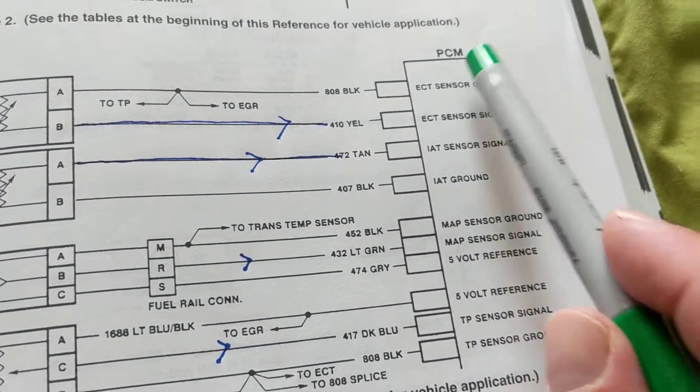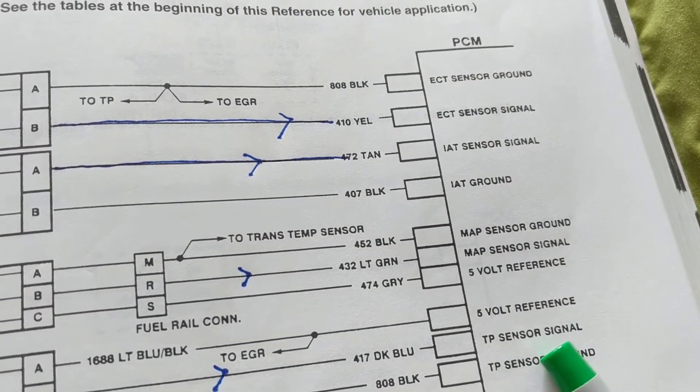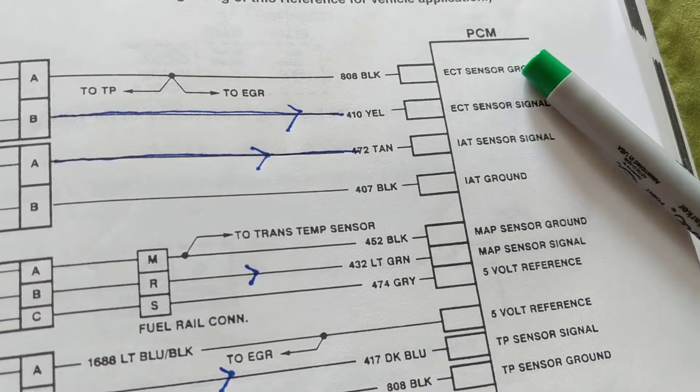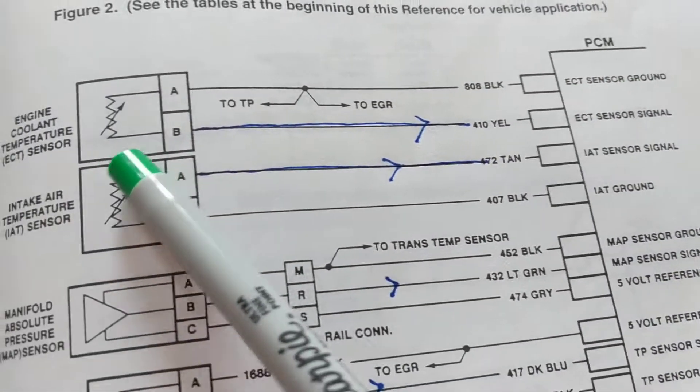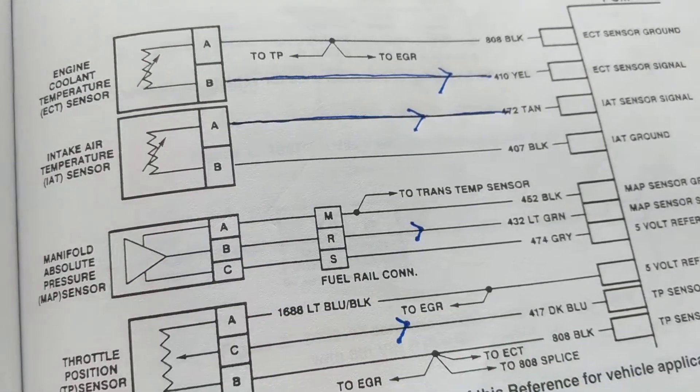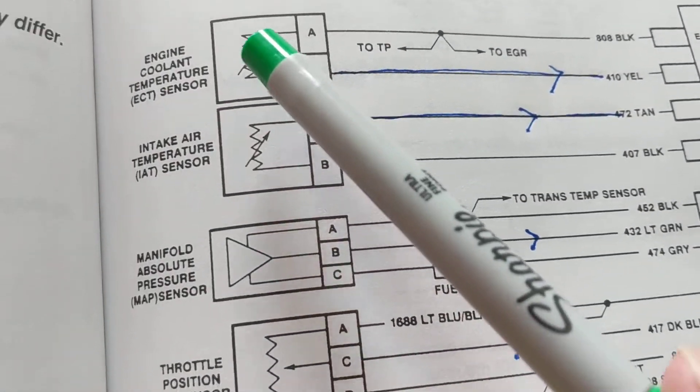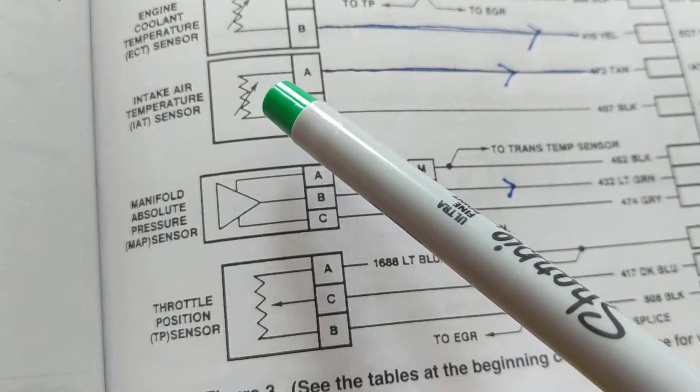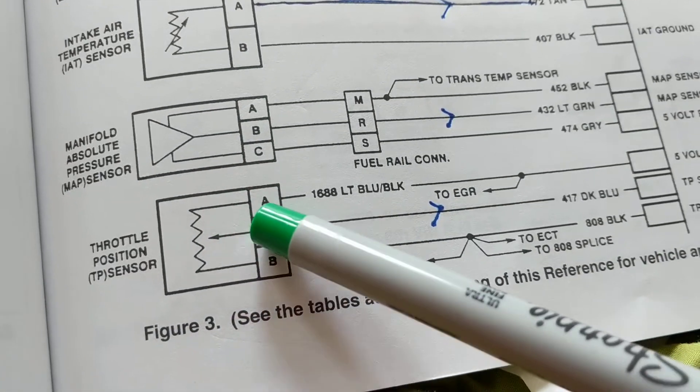This is the computer we've always been talking about. It's called the PCM, or it can be called the ECM - same function. This is the information, doesn't matter if it's an engine cooling temperature sensor, intake air temperature sensor, or throttle position sensor.